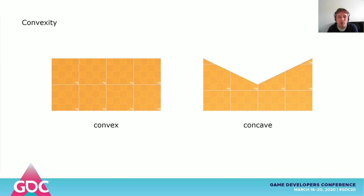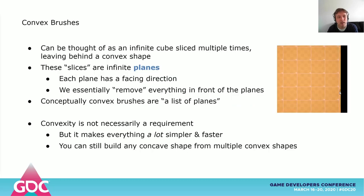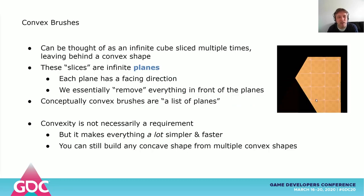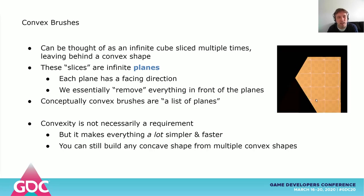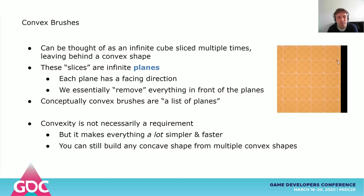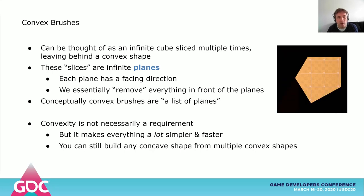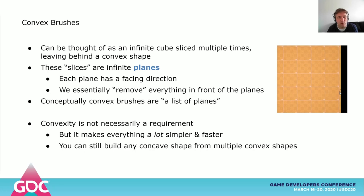Just in case you're not familiar with what convex means: on the left is a convex shape, on the right is a concave shape. What makes the shape on the right concave is the inward bend into the shape. In the convex shape, each polygon never has any vertices in front of it — they're always on the polygon or behind it. Imagine slicing an infinitely sized cube multiple times and creating a shape this way, but obviously in 3D. It could be a cube, a cone, or even a sphere, or a million other simple shapes. This is essentially how a convex brush is defined. You have a list of mathematical planes that bound the shape.